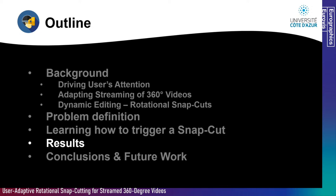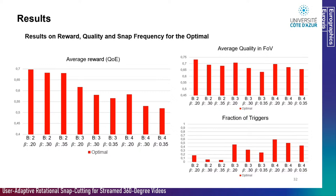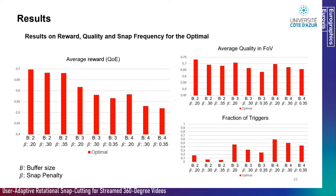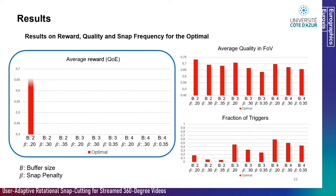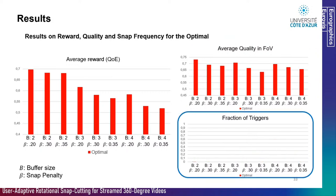For the decision step, we classify whether the snap cut should be triggered using a decision tree. Inputs are set to be as close as possible to the reward components: future overlap values account for quality in the field of view, and the second component is the relative snap position in time. We use traces from real users of 20-second-long videos and emulated the streaming process and user snap reaction. We present performance in terms of reward, quality in the field of view, and fraction of snap cuts triggered, for different values of buffer size and snap cut penalties.